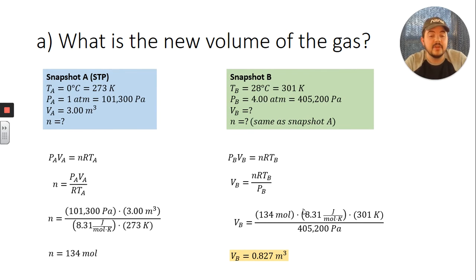Also keep in mind, since we're using this value of 8.31 for our ideal gas constant which has units of joules per mole Kelvin, the amount of gas needs to be in units of moles.